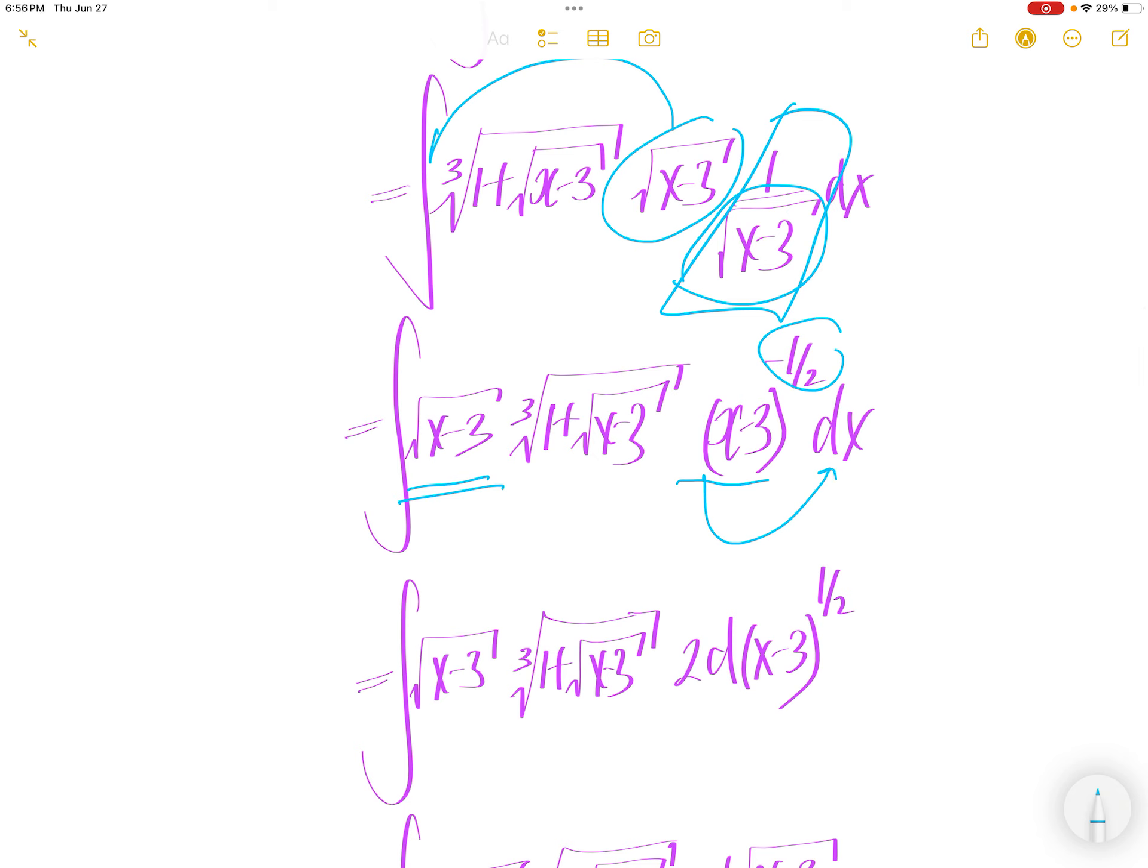Derivative of x minus 3 to the power of half is half comes down. Cancel with 2 you get 1. x minus 3 to the power of half less 1 is x minus 3 to the power of negative half dx. Basically, this is that.